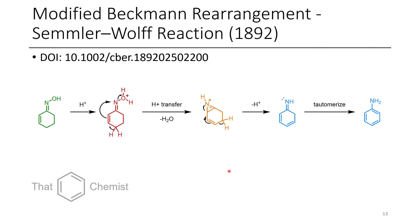Now let's talk about the Semler-Wolff reaction, which is kind of like a modified Beckmann rearrangement. What you can do is start with an enone, make an oxime from the enone, and then treat this with a strong acid or an activator. Through a process forming an aziridinium, you can then form this alpha-beta-gamma-delta unsaturated imine, which can tautomerize to form an aniline. This is a cool way to make a benzene ring that might not be super intuitive, and it might be underutilized for synthesizing anilines.